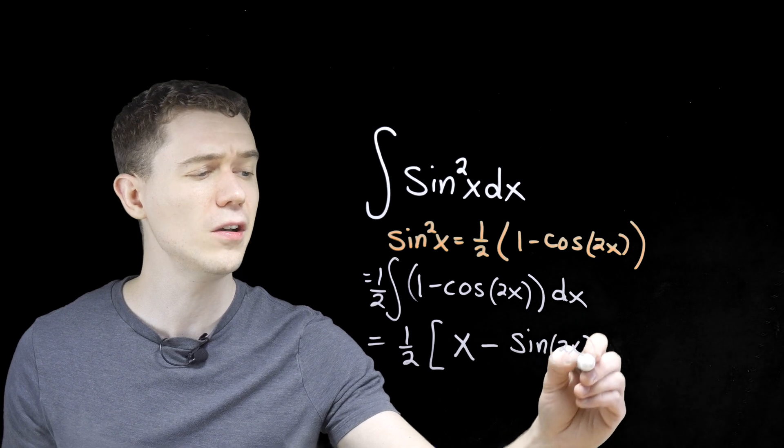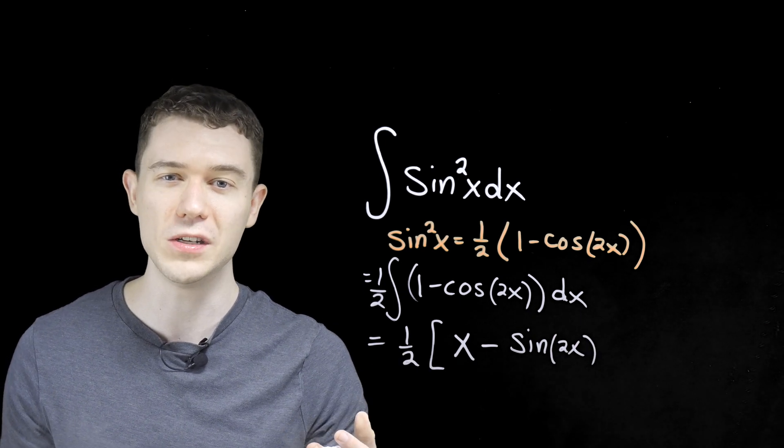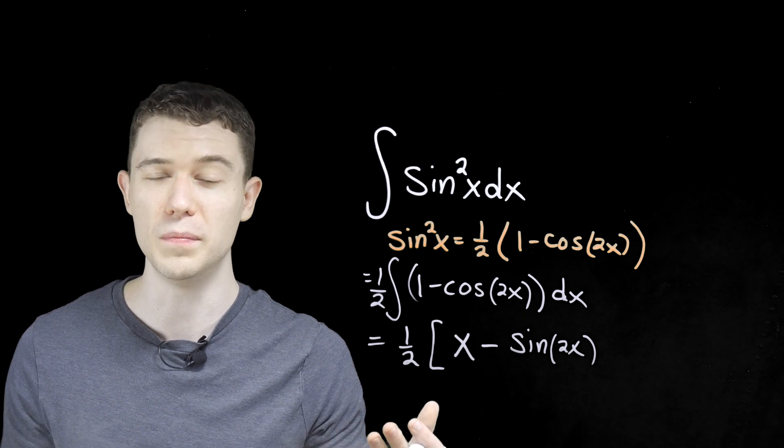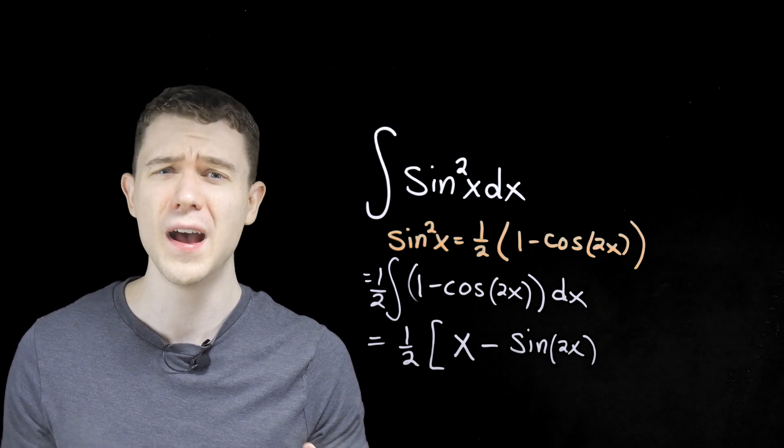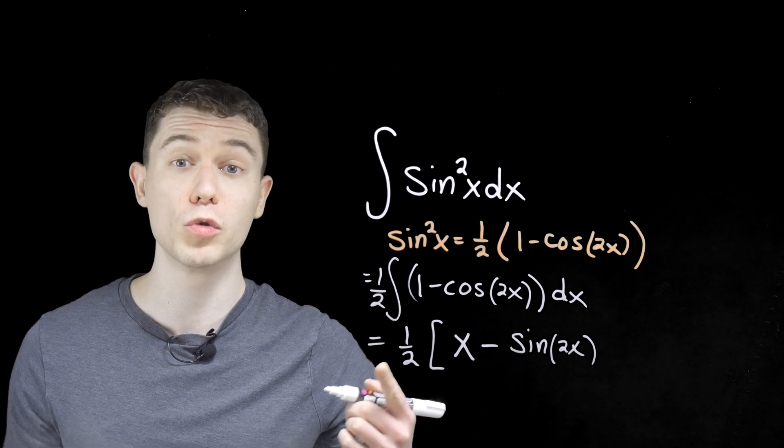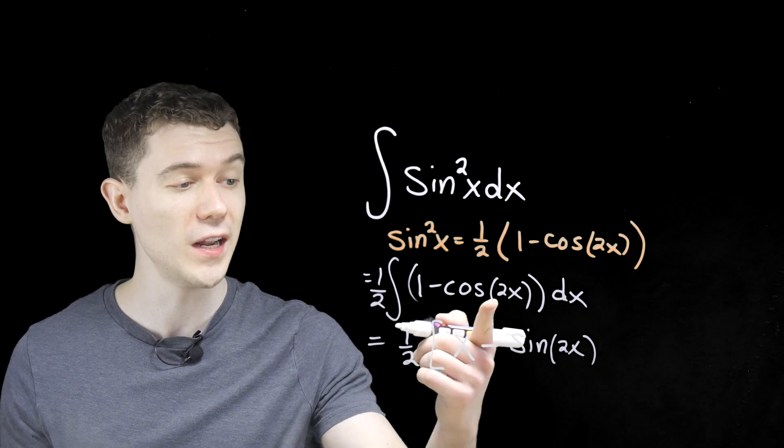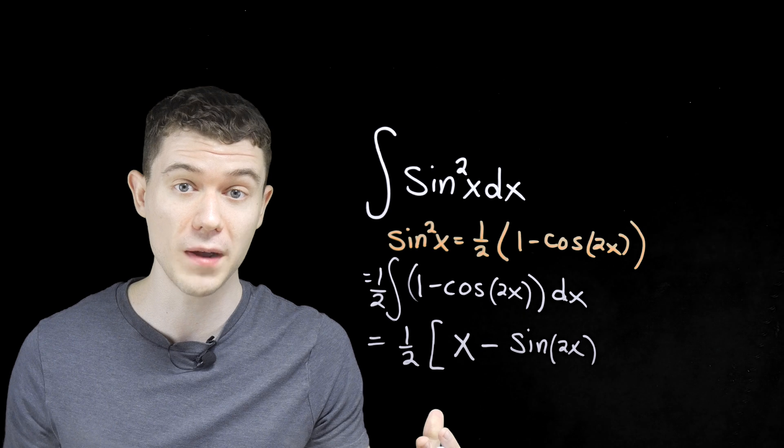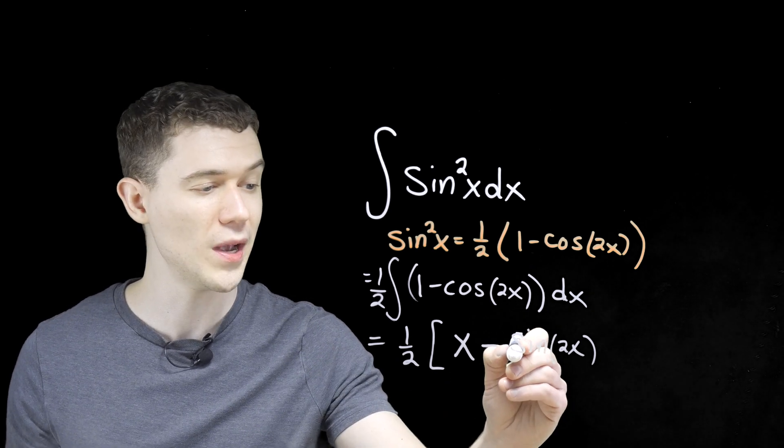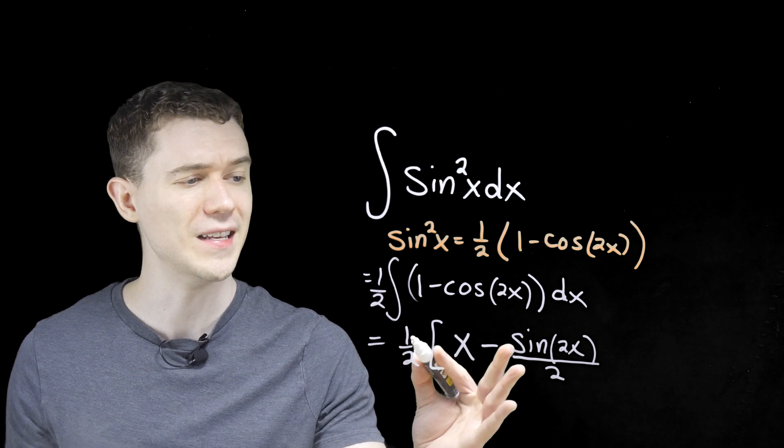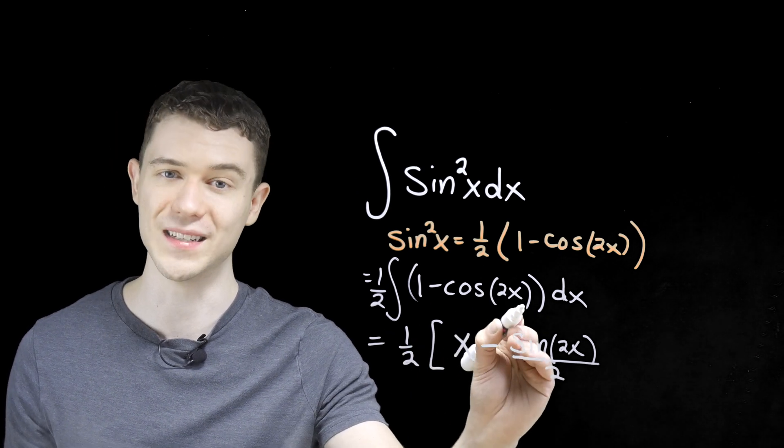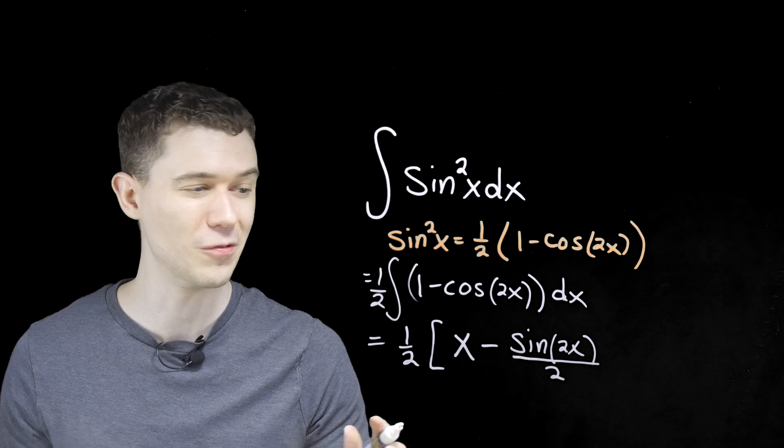And I could have done a mini-u substitution here, letting u be 2x and du would be 2dx, and we'd have a factor of a half come out front. I prefer to remember that when we're deriving, using the chain rule here, we would have had to multiply by 2. We're antideriving, so we have to divide by this 2. It's just a nice little shortcut in these situations when you have a constant times x, and that's only when it works there.